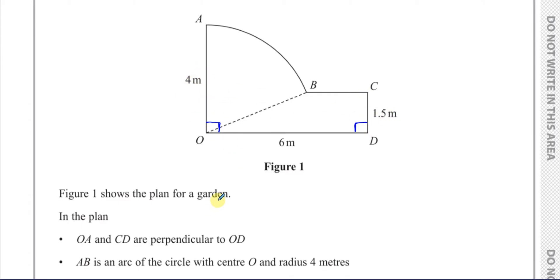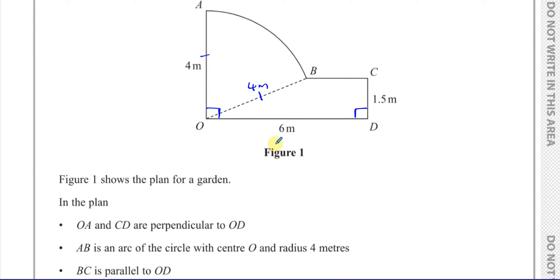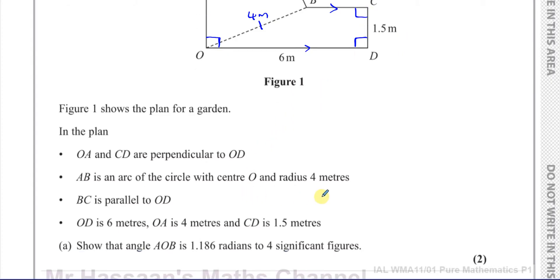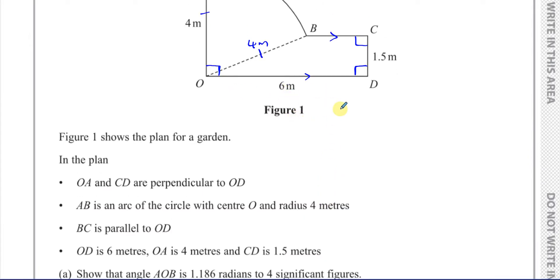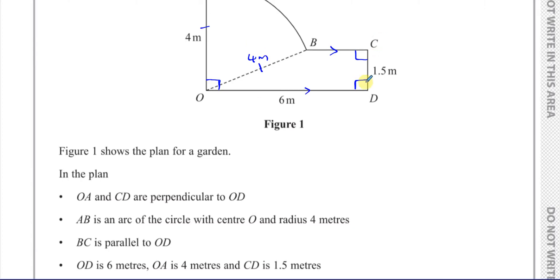AB is the arc of a circle with centre O and radius 4 metres, which means OB is also 4 metres. BC is parallel to OD, making this a trapezium shape, so the angle at B is also 90 degrees. We're shown OD is 6 metres, OA is 4 metres, and CD is 1.5 metres.